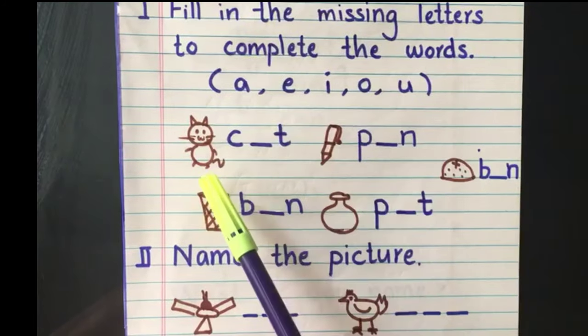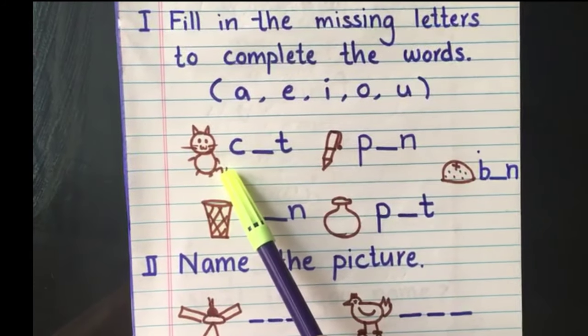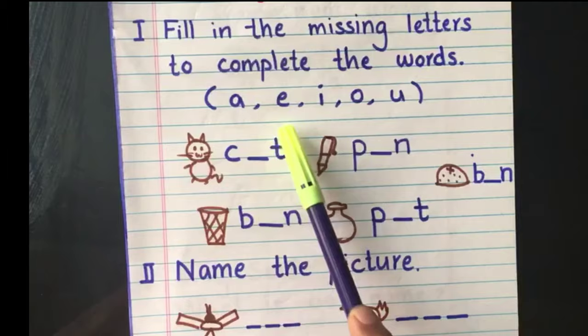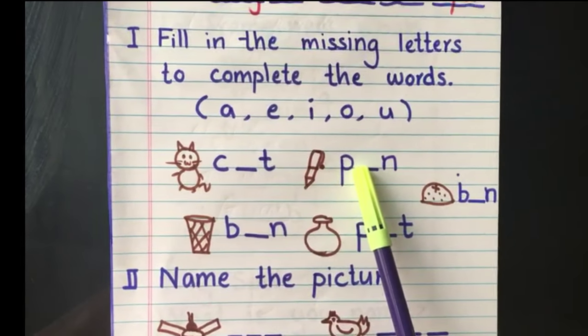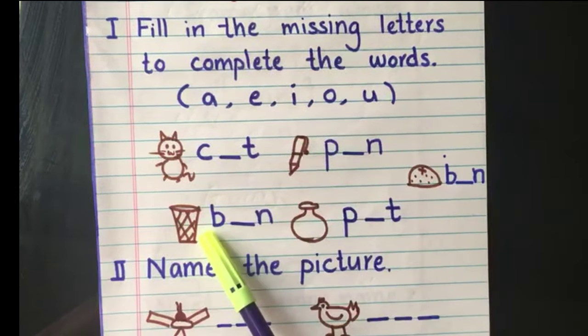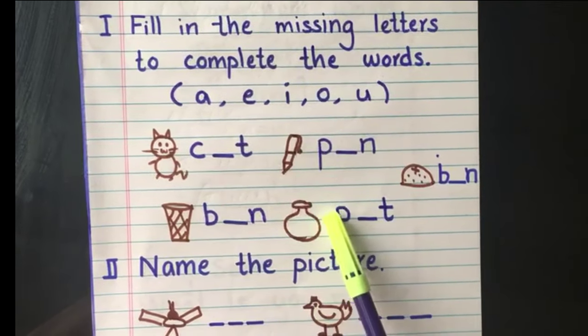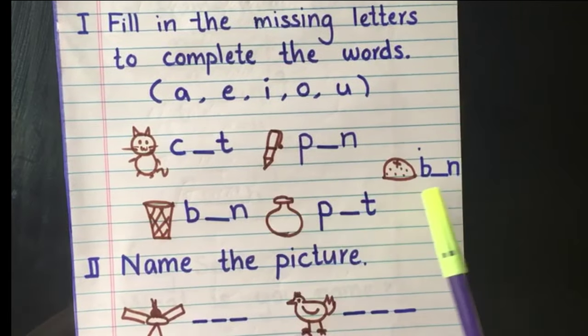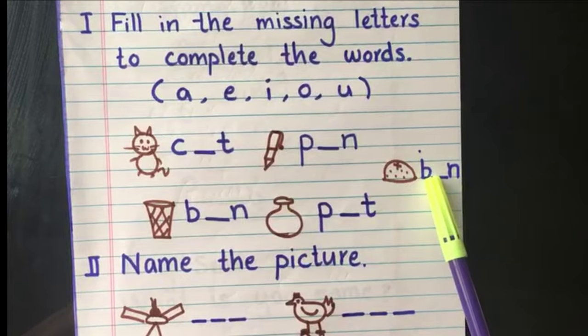I have prepared this question paper. The first picture is cat and I wrote C dash T. So they should fill the correct vowel in this. And like a bin, pot and a bun, all these things.